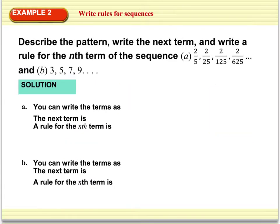For example 2, it says to describe the pattern, write the next term, and then write a rule for the nth term of the sequence. For part a, the sequence is 2/5, 2/25, 2/125, and 2/625. I write the n values below each term — 1, 2, 3, and 4 — because I know I'll be plugging in 1 for the first term, 2 for the second term, 3 for the third, and so on.